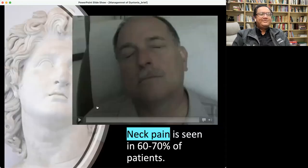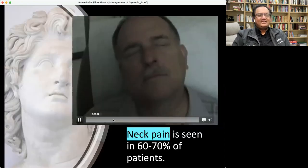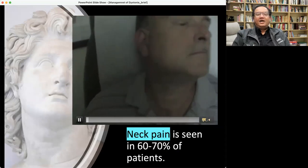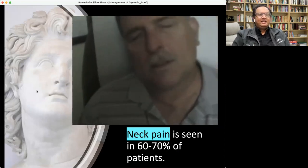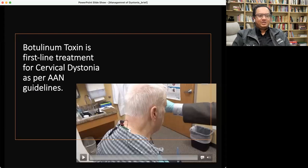In fact, for something like cervical dystonia, which often has neck pain associated with it, or other muscle tightness, the American Academy of Neurology now recommends as first-line treatment with cervical dystonia.